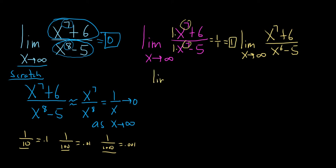As another simple example, let's say that I put some numbers there, just for fun. Say it's 3x to the 7th plus 6 over 2x to the 7th minus 5. In this case, it's the same, except it would be 3 over 2, right? Because you just look at the coefficients.